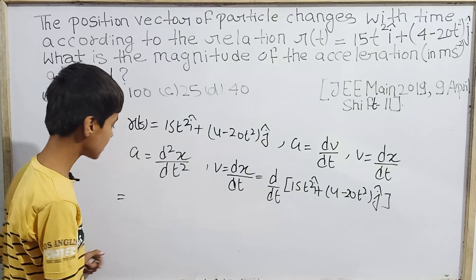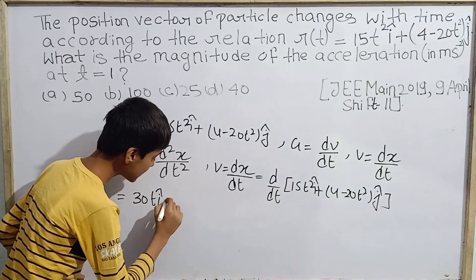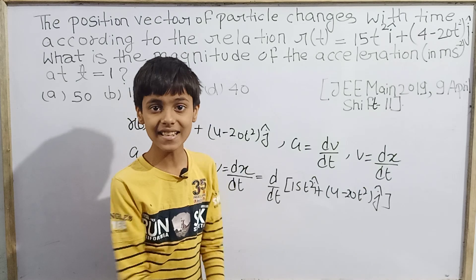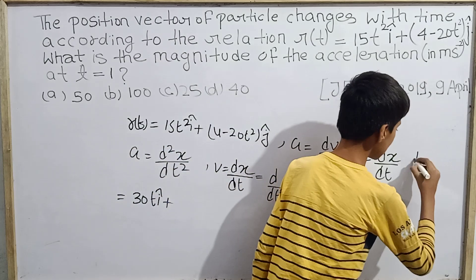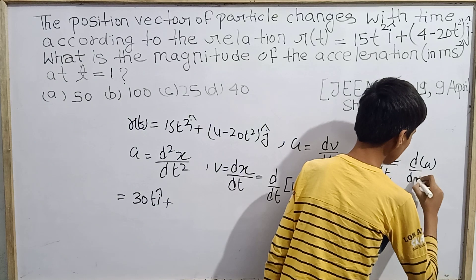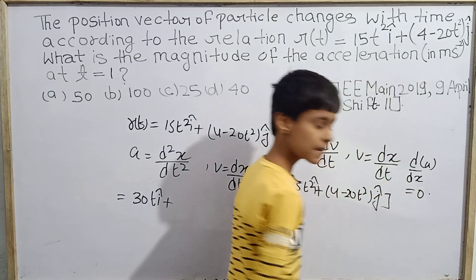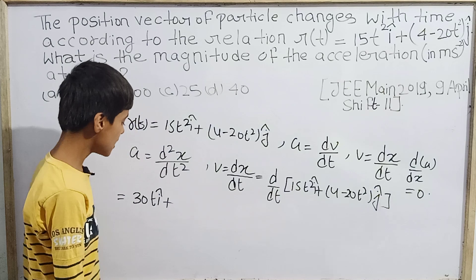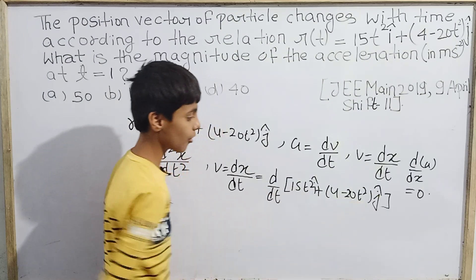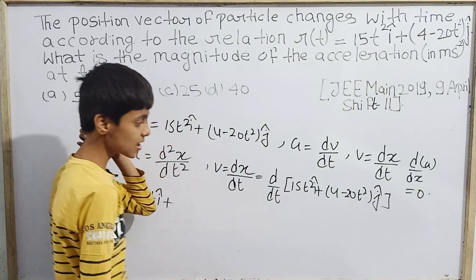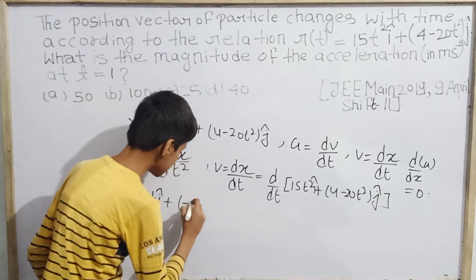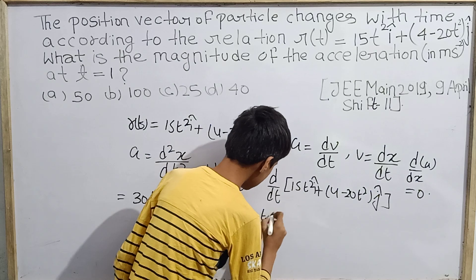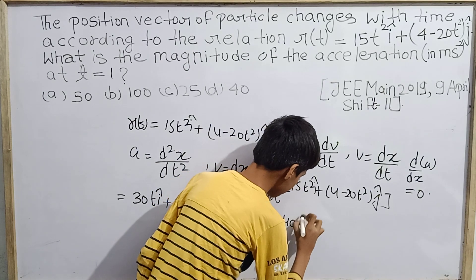Differentiating 15t² î gives 30t î. For the j-component: 4 is a constant so its derivative is 0, and the derivative of −20t² is −40t. So the velocity is v = 30t î − 40t ĵ.